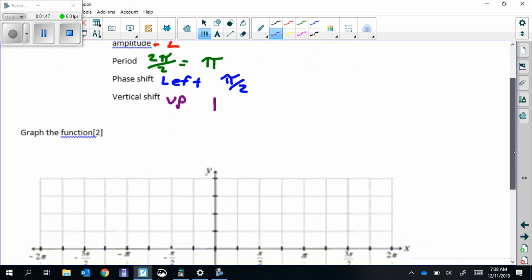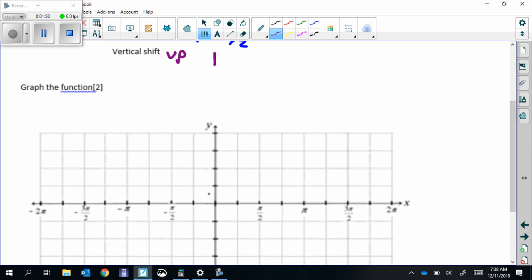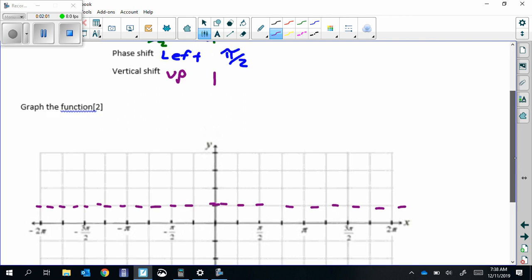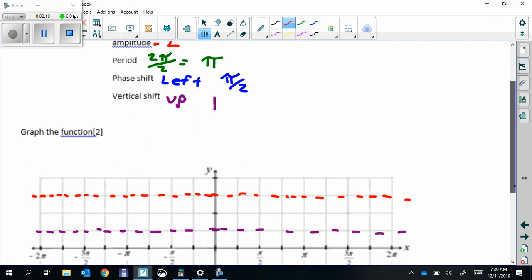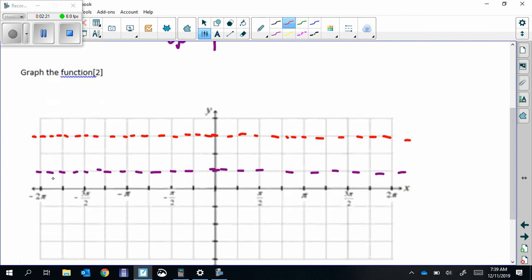Shifting up one unit is our vertical shift. We're going to start by drawing a horizontal line that goes through that shift up one unit. This is our midline for the function. Now we're going to take amplitude of 2, and from that midline we go up 2 units and down 2 units. That's going to contain our cosine.